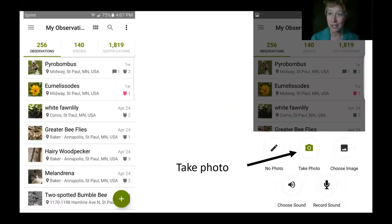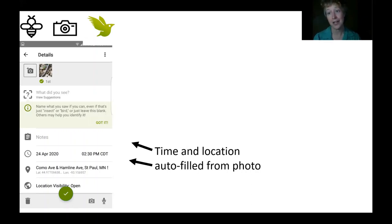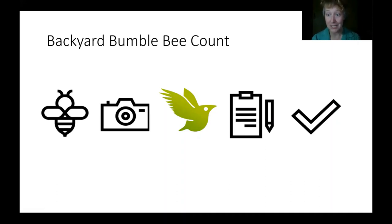In iNaturalist, you can just go into the app and take a photo. It will automatically fill in the time and location. If you're doing this on a camera and uploading on the website, you'll just need to enter those things in manually. The option to do more is that you'll keep track of the time that you spend looking, and you'll also note counts when you see the same bee species and sex of bee on a particular flower.